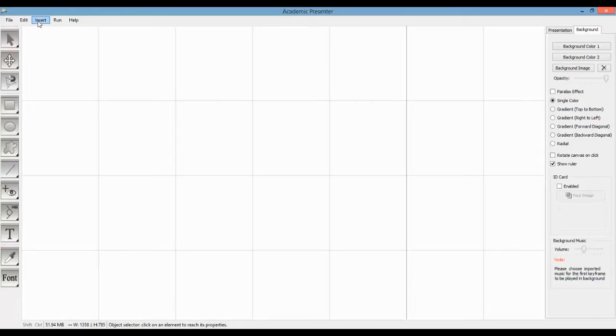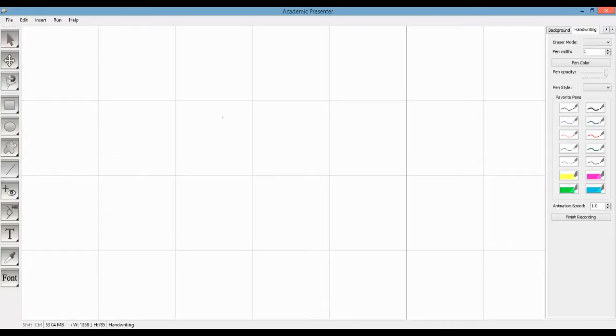To use this feature, you need to choose handwriting tools from the insert menu. Now you can write on the visible canvas. There are some tools in the handwriting panel.